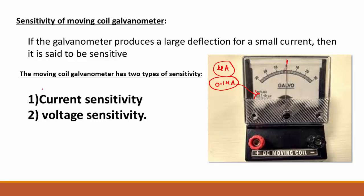The moving coil galvanometer sensitivity can be divided into two types: one is current sensitivity and another is voltage sensitivity of the moving coil galvanometer.